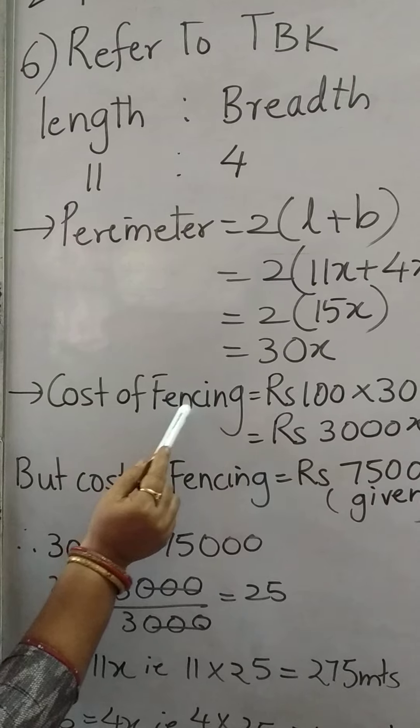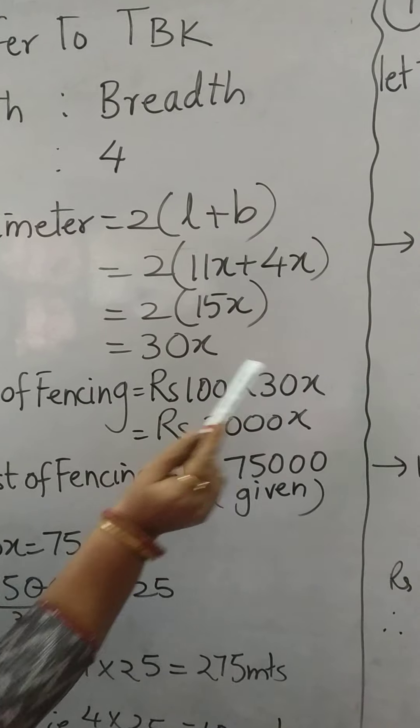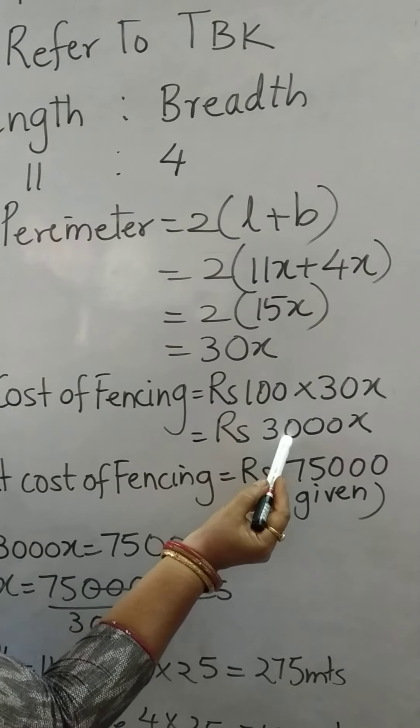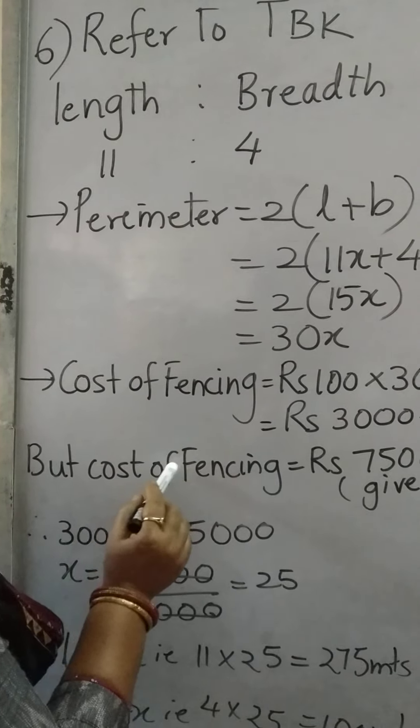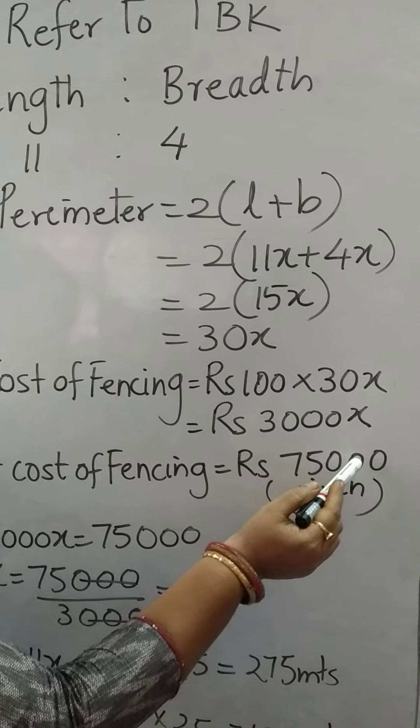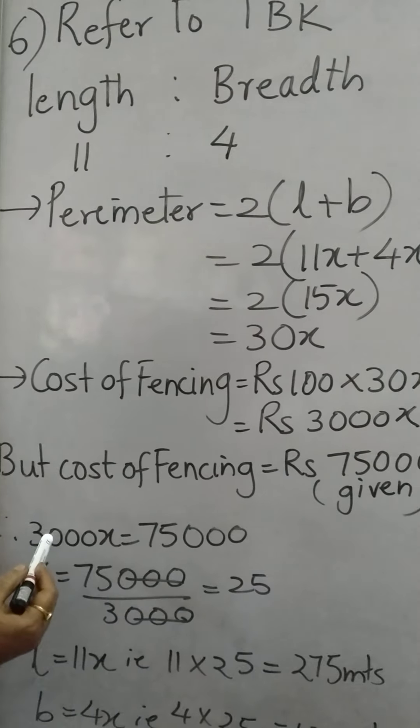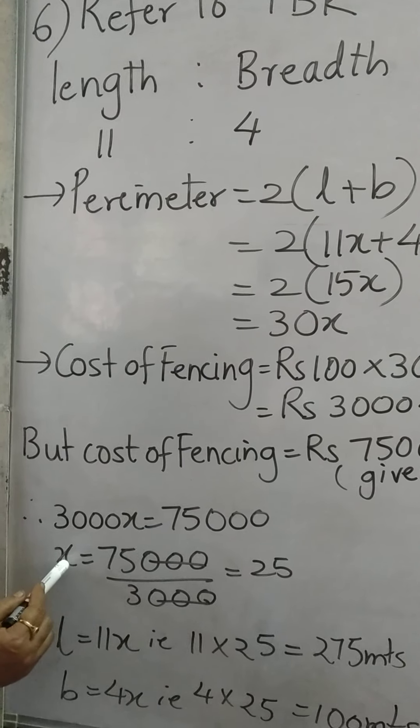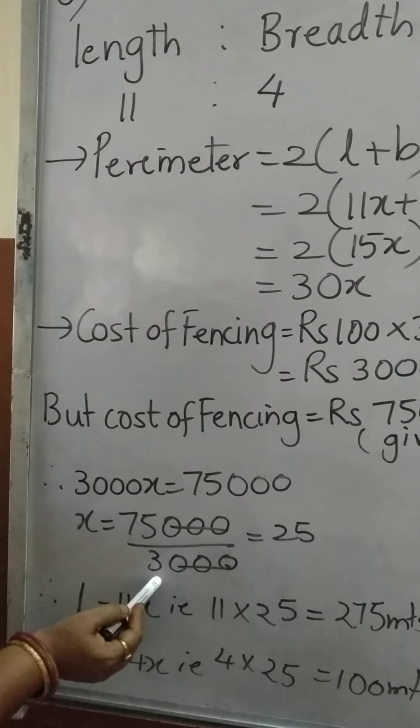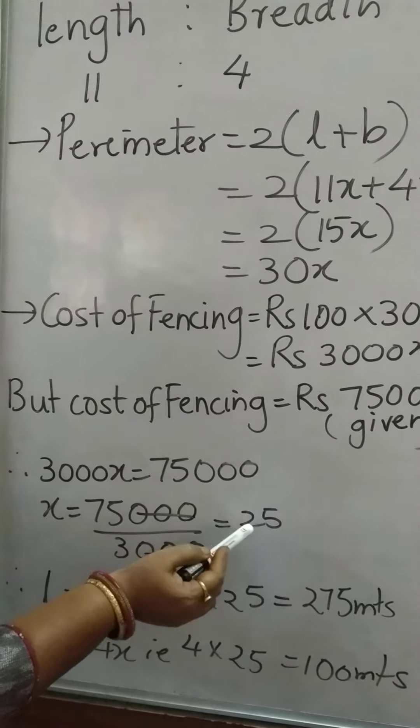Cost of fencing is rupees 100 into 30x, so we get rupees 3000x. Now read the question and it is given cost of fencing is rupees 75,000. So we write down 3000x equal to 75,000. So x equal to 75,000 upon 3000, so x will be 25.